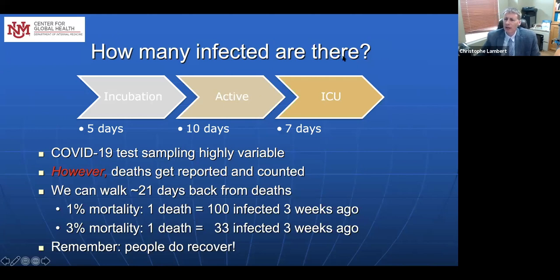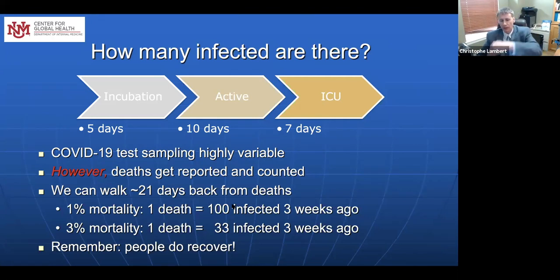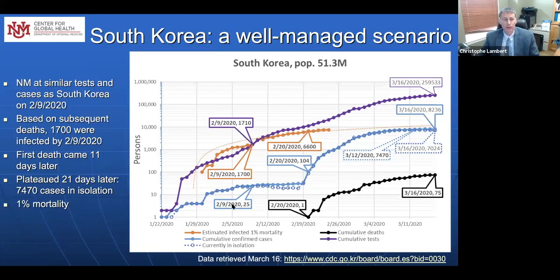The challenge in figuring out how many infected there are is really exacerbated by how variable COVID-19 testing is. It's not some broad random sampling — it's targeted towards people who have symptoms generally. But what we can do is look at death data and walk back 21 days. If you're seeing a certain number of deaths now on average, depending on the mortality rate, for every death there might be between 33 and 100 infected three weeks ago. Remember also people do recover, so a lot of these graphs showing cumulative rising amounts — eventually the active portion of the population tapers off as the system recovers.